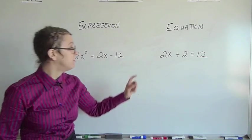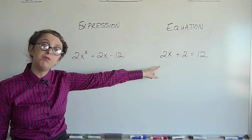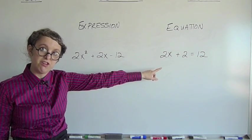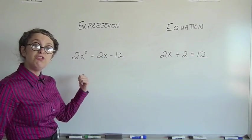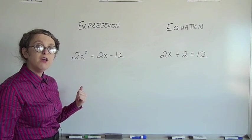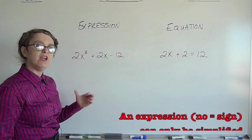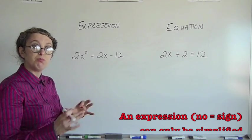So what that means is for these two math problems, you're going to have two different sets of directions. This one over here, you can only do what's called simplifying it, which means using the order of operations to make a math problem smaller.